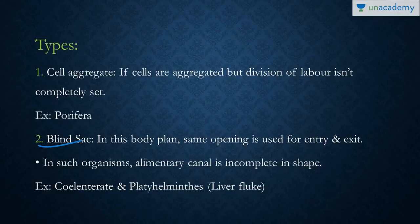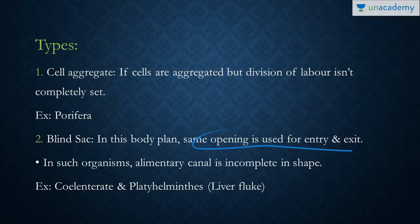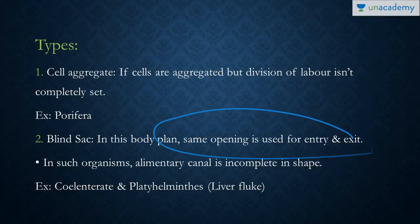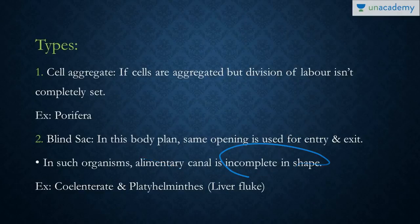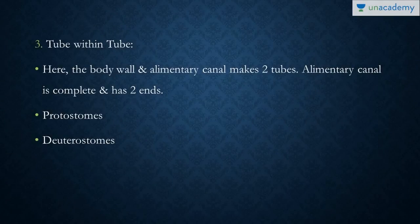Then we have the blind sack. In this type of body plan, only a single opening is used for entry and exit. We have a mouth and an anus normally, but in this type only a single opening is present. As a result, the alimentary canal is incomplete. It is present in cnidarians and platyhelminthes, the flatworms.